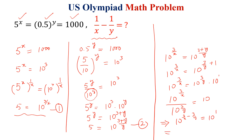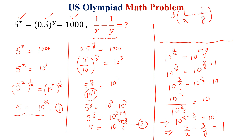This implies 3 over x minus 3 over y is equal to 1. Taking 3 as common factor, 1 over x minus 1 over y is equal to 1 over 3. This is the required answer.